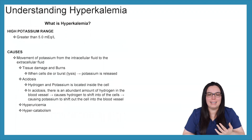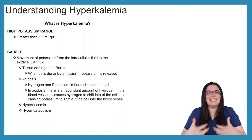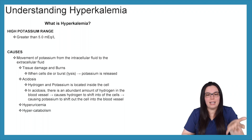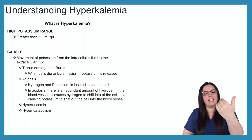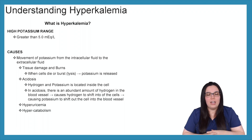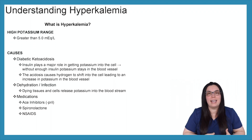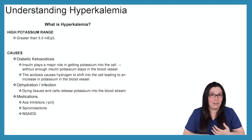Additional causes include movement of potassium from the intracellular fluid to the extracellular fluid, such as tissue damage and burns — that causes cells to die and burst, releasing all of that potassium. Acidosis: with the hydrogen-potassium relationship, acidosis causes an abundant amount of hydrogen in the blood vessel, shifting hydrogen into the cell, which drives potassium out of the cell. You can also see hyperkalemia with hyperuricemia and hypercatabolism. Diabetic ketoacidosis involves both acidosis and the fact that insulin plays a major role in getting potassium into the cell — without enough insulin, potassium stays in the blood vessel.